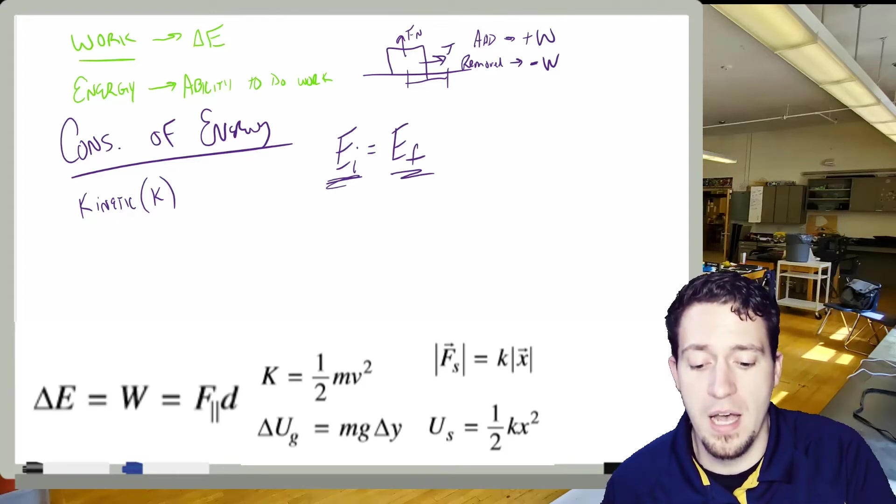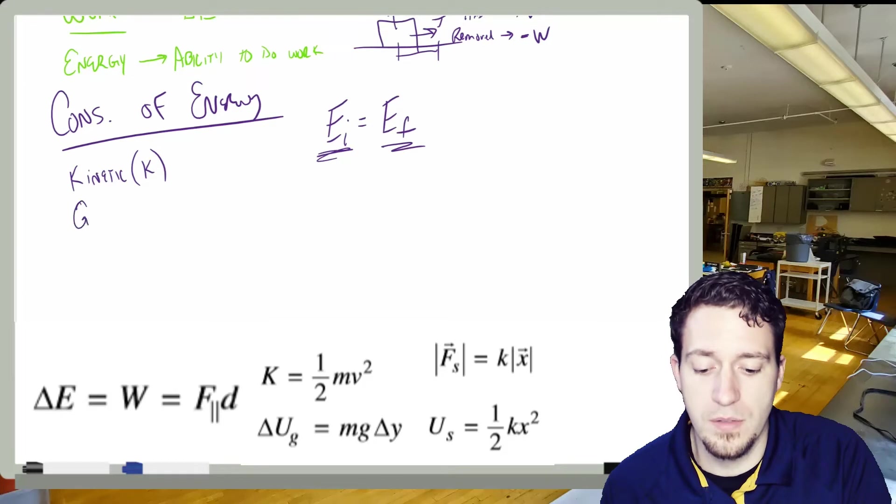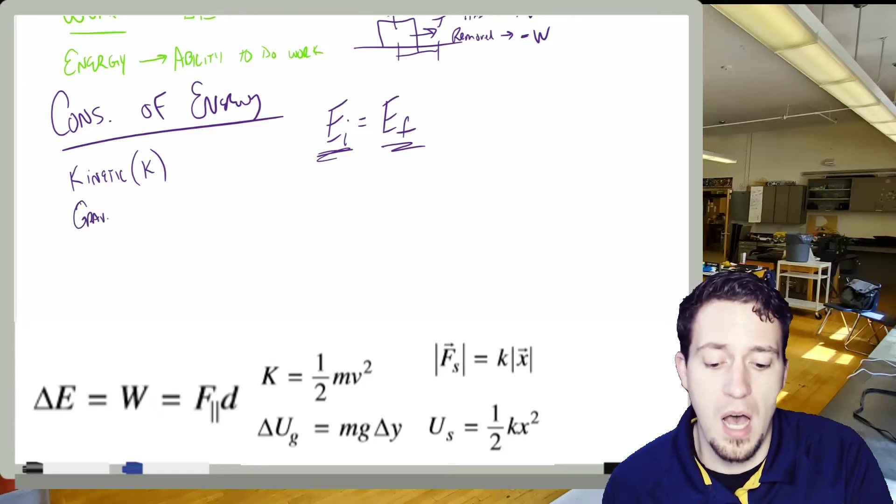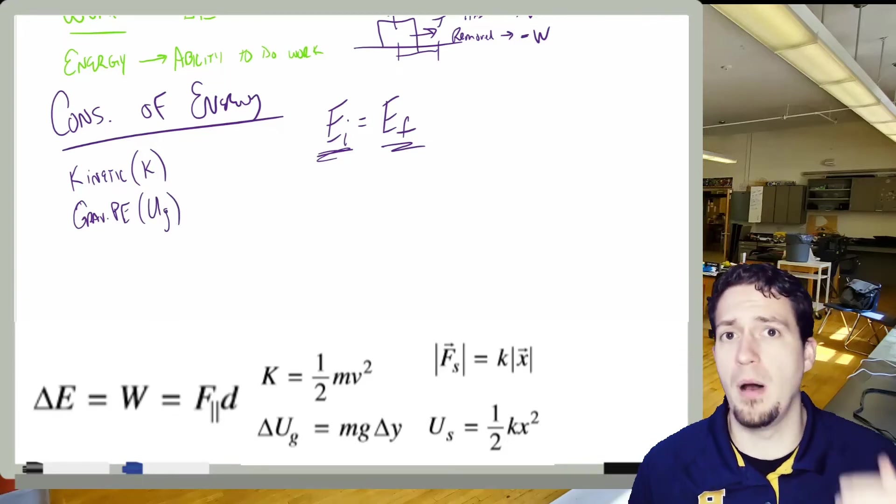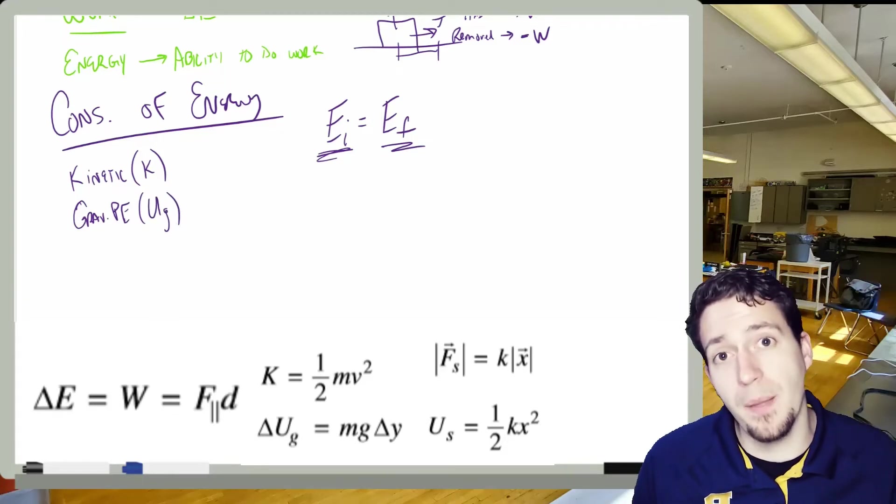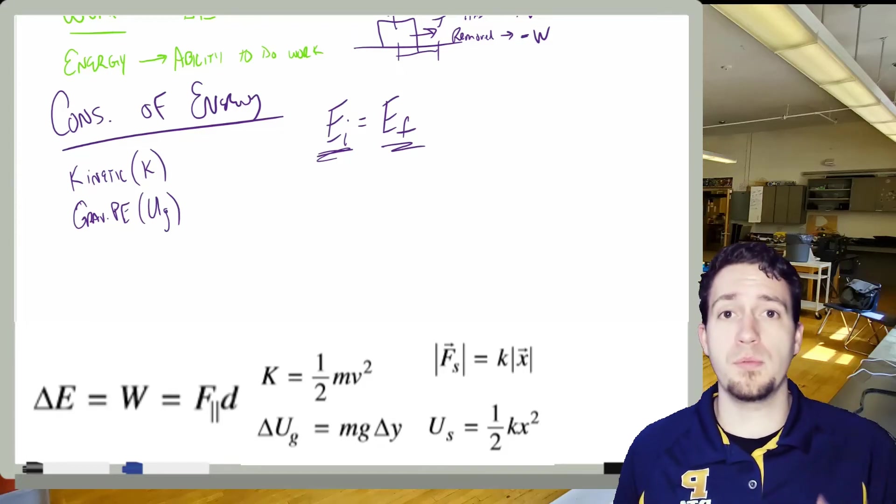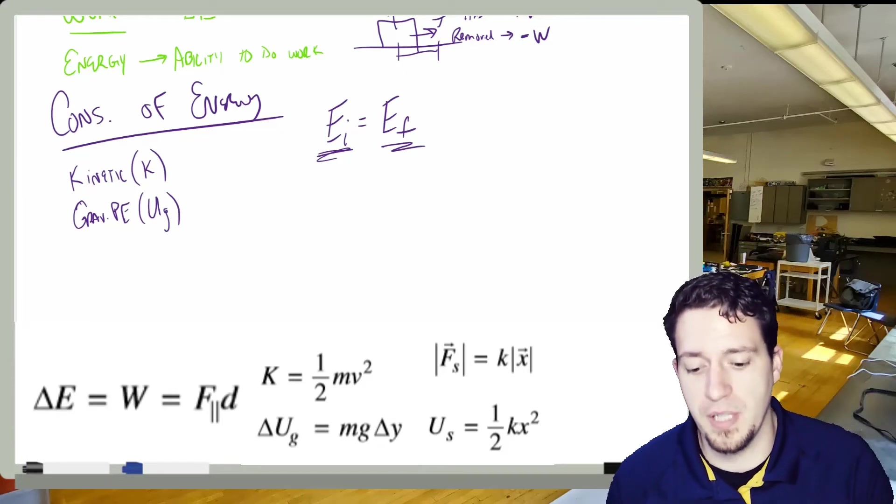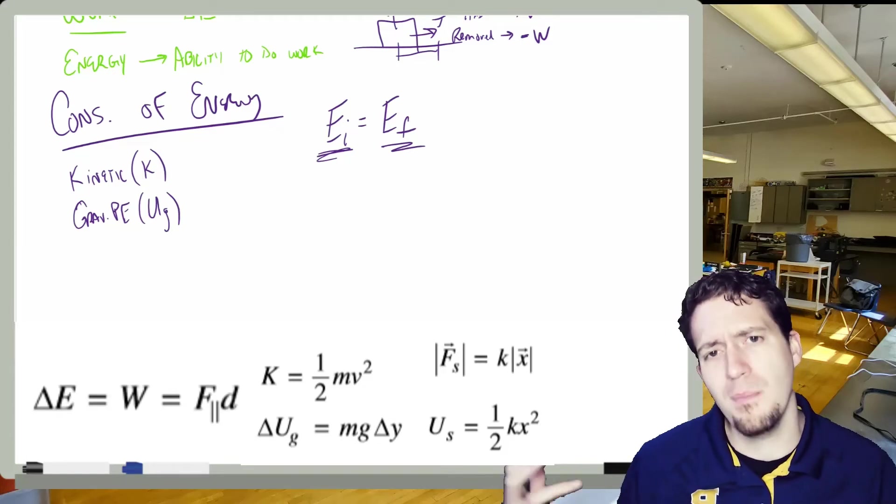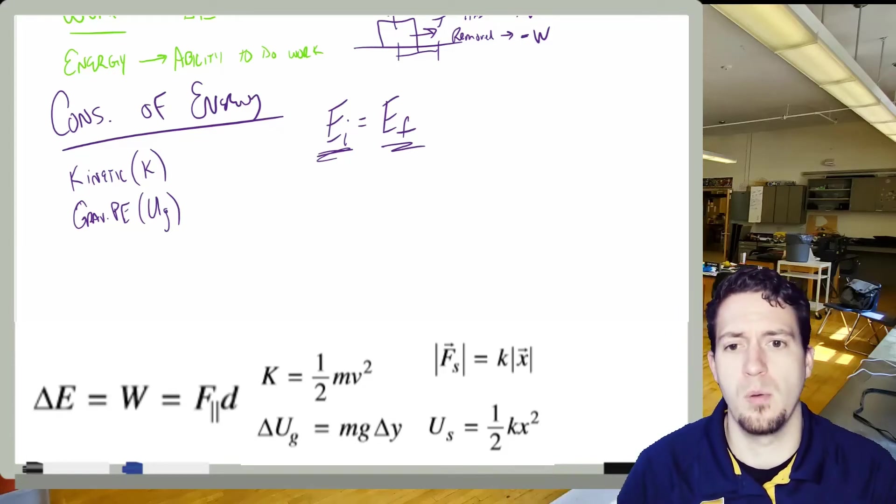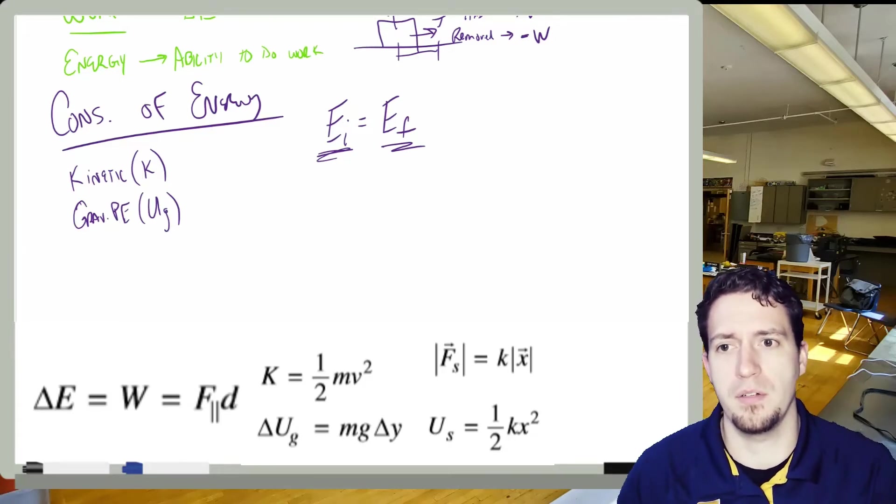We could have gravitational potential energy. And the symbol for this is UG. And that is anything above sort of a base level that's set by us. Typically, the ground is what we use. Anything above that level would have gravitational potential energy. You can see the equation there, dictated by mass, obviously. So more massive things would have more gravitational potential energy.